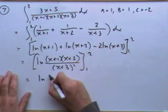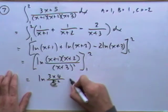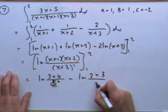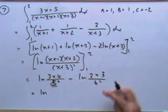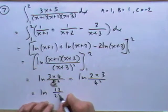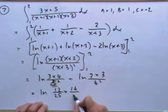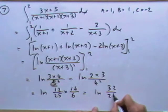Substituting: ln(3×4 / 5²) minus ln(2×3 / 4²). That's ln(12/25) minus ln(6/16). Subtracting logs means dividing, so I multiply 12/25 by the reciprocal 16/6. The 6 and 12 cancel leaving 32 on top and 25 underneath, giving ln(32/25) as the answer for question seven.